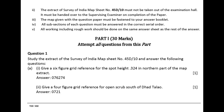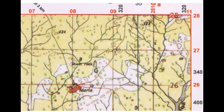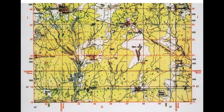Question 1. Study the extract of the Survey of India Map Sheet No. 45D-10 and answer the following questions. Give a six-figure grid reference for the spot height 324 in the northern part of the map extract. Answer: 076274. Give a four-figure grid reference for open scrub south of Dad Talao. Answer: 0721.